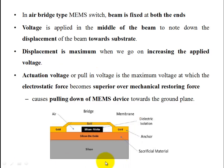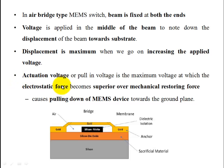In a bridge-type structure, the middle portion is movable. As a result of applied voltage, the beam will move towards the substrate — that means the beam will bend. As voltage increases, the actuation voltage increases. When it reaches the actuation or pull-in voltage, the electrostatic force overcomes the mechanical restoring force. As a result, the bridge structure moves towards the substrate and collapses.